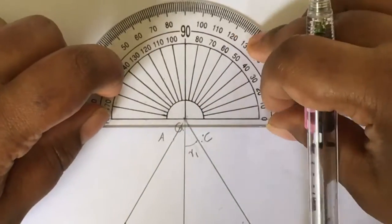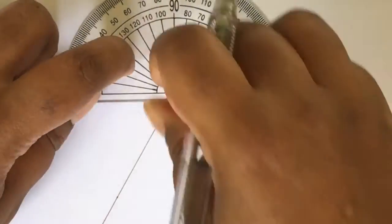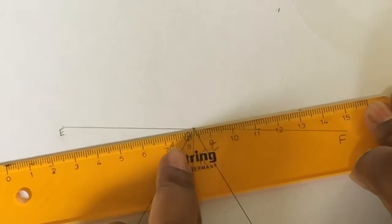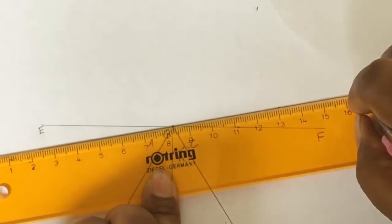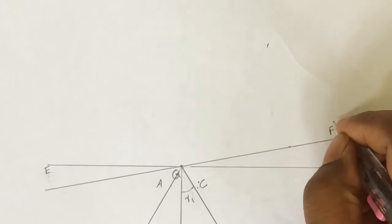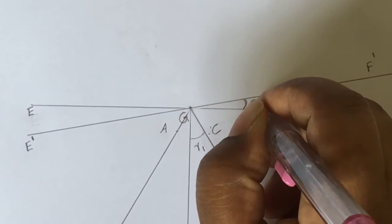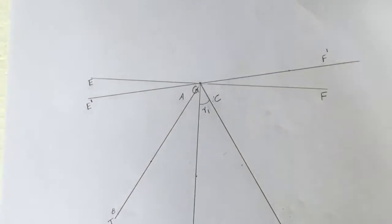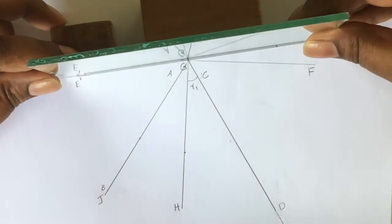Next, measure 10 degree from the line EGF. Draw a line E' G' F'. Mark the angle as theta. Place the mirror so that it stands along the line E' F'.